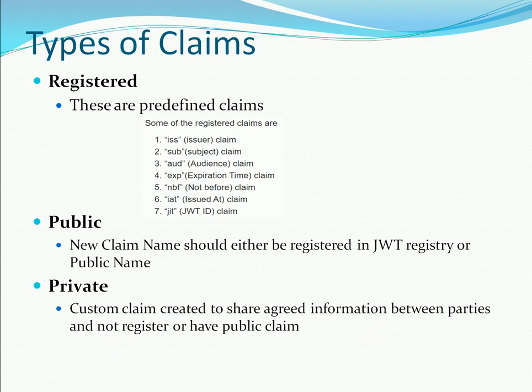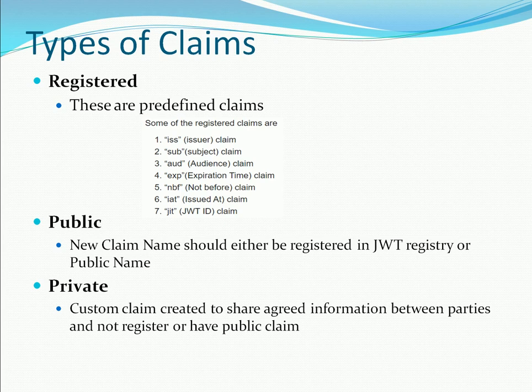So what are all the types of claims? First are registered claims — these are pre-defined by the JWT community. For example, the issuer, expiration time — some examples are shown on the screen. Next are public claims, where you generate a new claim name that is registered in the JWT registry. Third are private claims, which are custom claims created by agreement between two parties that use them.